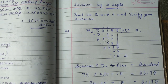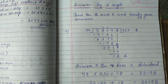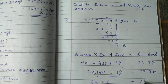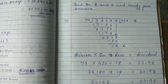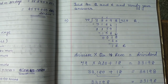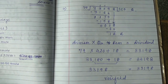When you add it, you get 33,198 on both sides. Both sides are equal, which means the answer is verified.